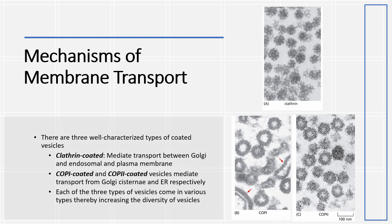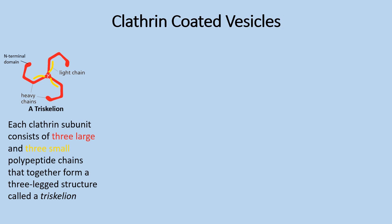Each of the three types of vesicles come in various types thereby increasing the diversity of vesicles. Each clathrin subunit consists of three large and three small polypeptide chains that together form a three-legged structure called a triskelion.